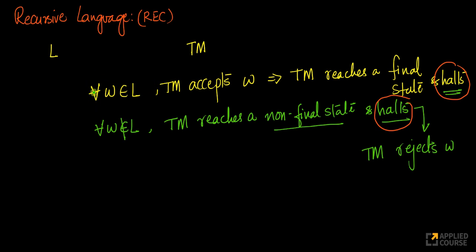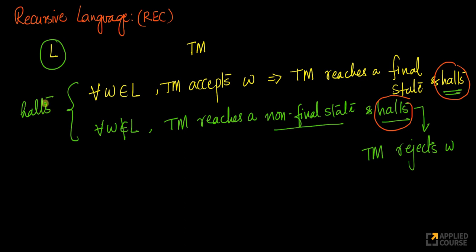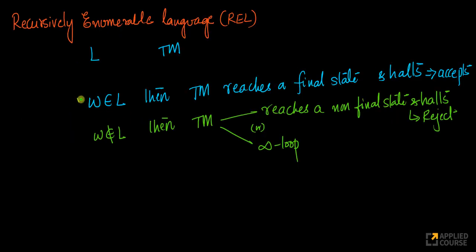So if a word belongs to language L, the Turing machine accepts it — goes to a final state and halts. If the word does not belong to the language, the Turing machine either reaches a non-final state and halts, basically rejecting that word, or it gets into an infinite loop. In both cases for a recursive language, the Turing machine is guaranteed to halt.